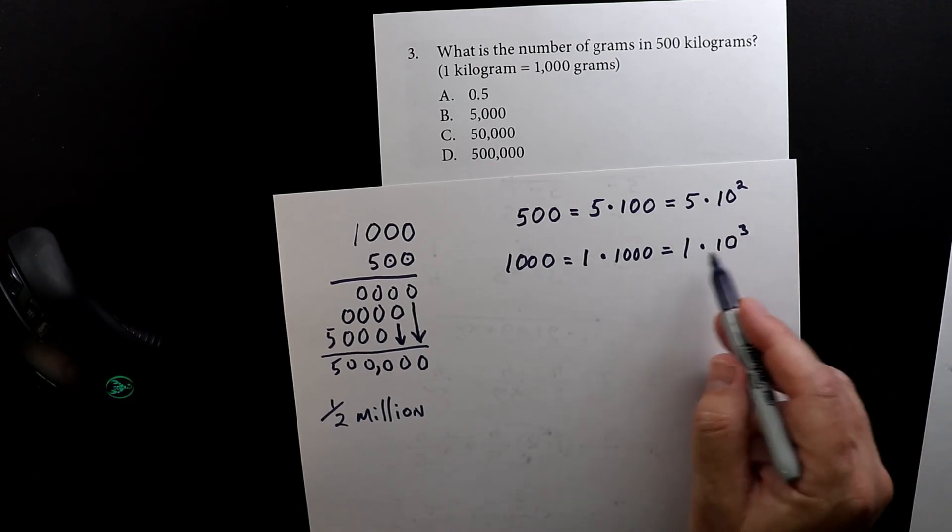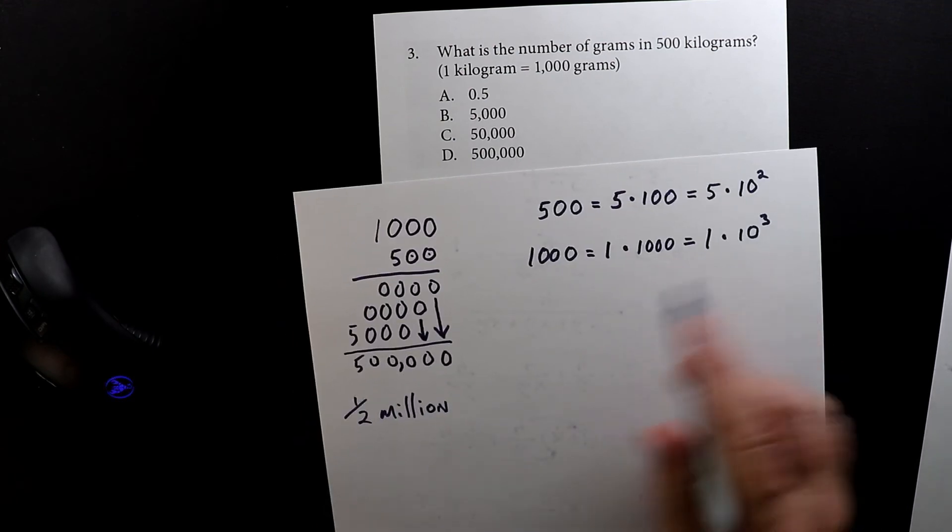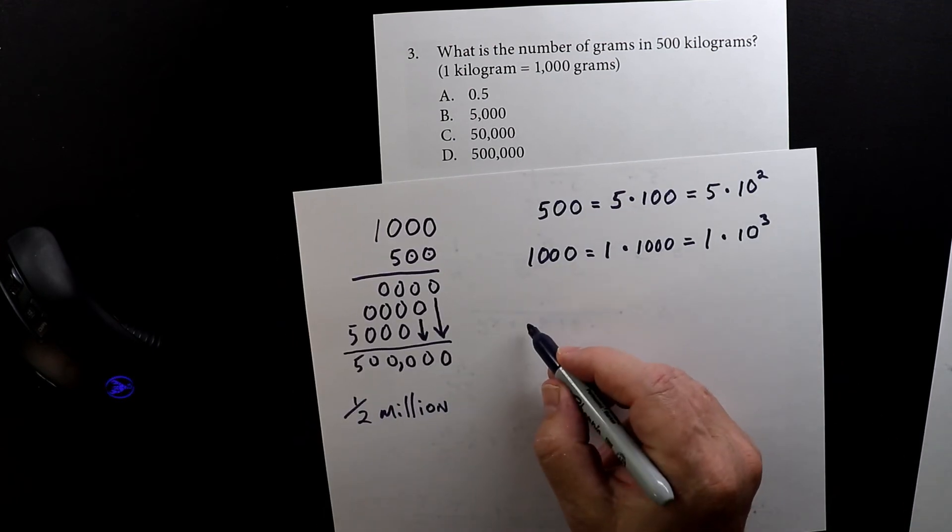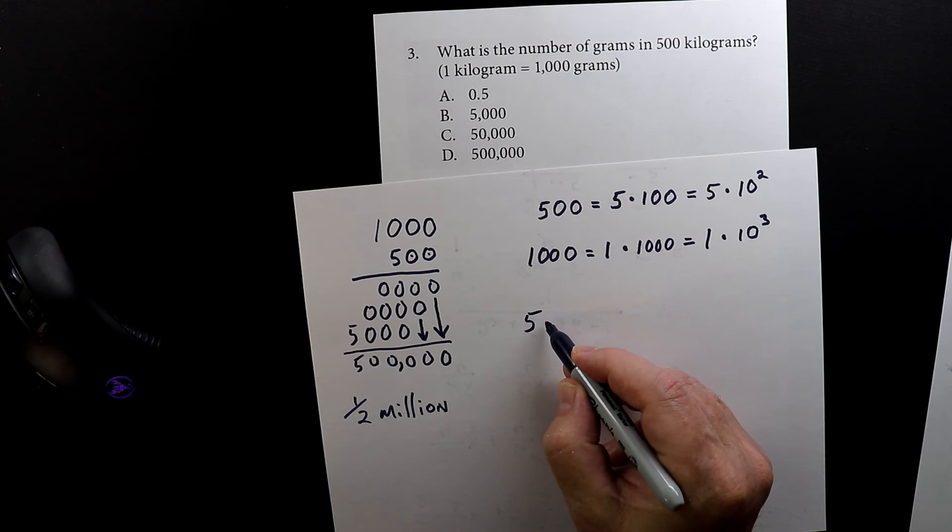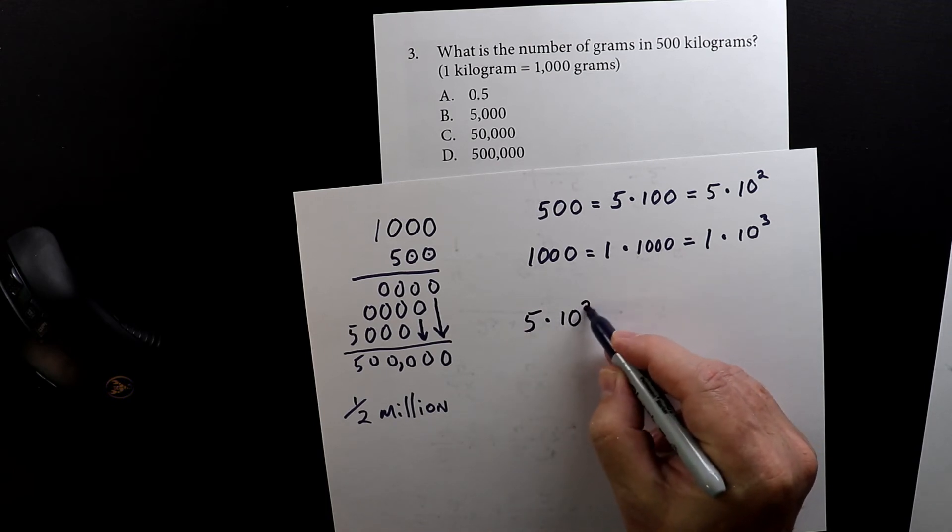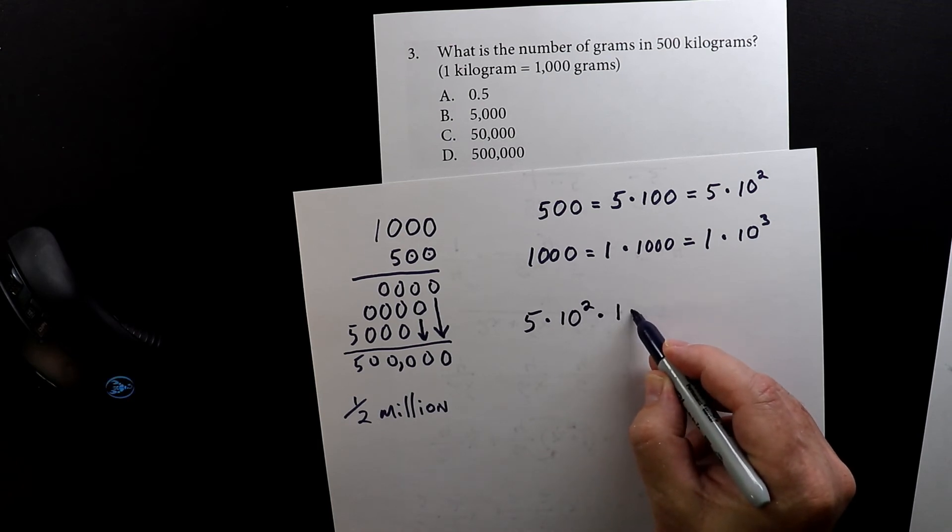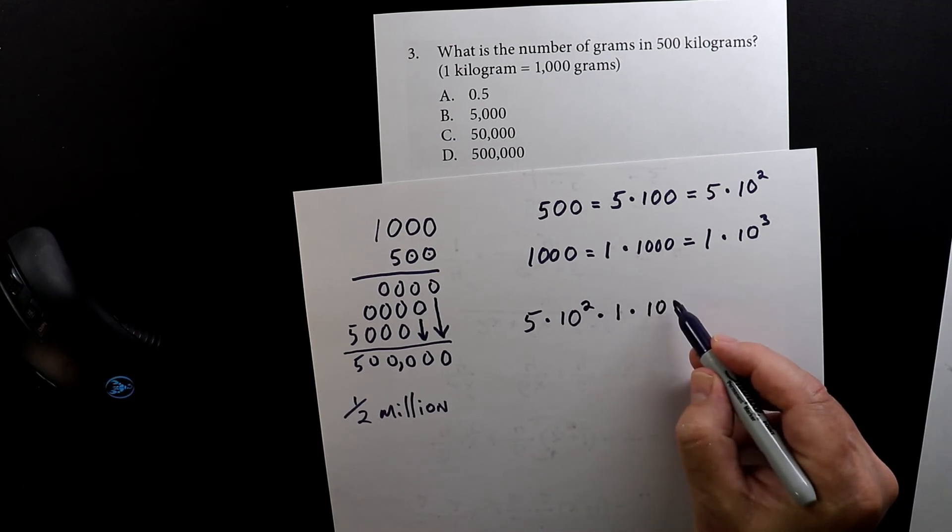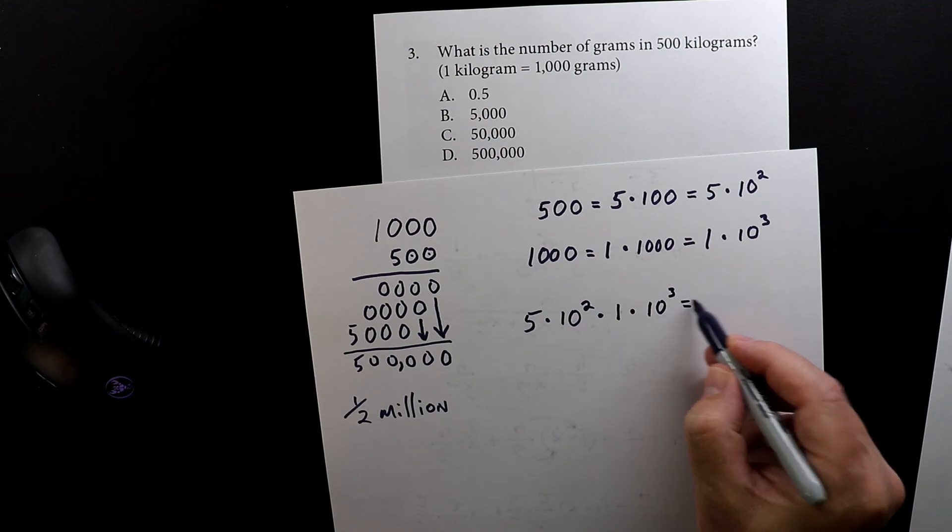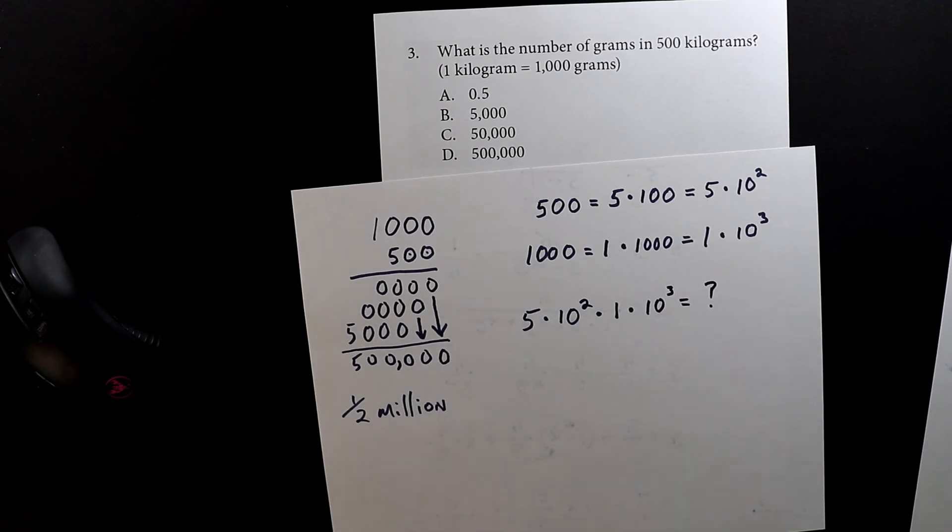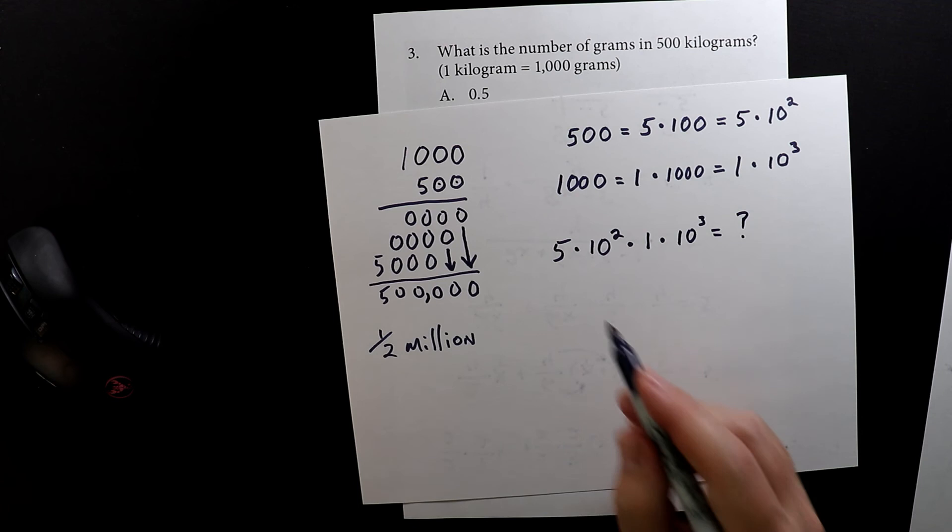Now what I want to do is multiply these two things together. So let's write it out this way: we have five times 10 squared (10 to the second power) times one times 10 to the third power equals—who knows?